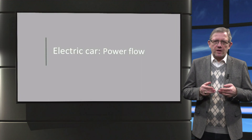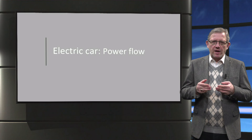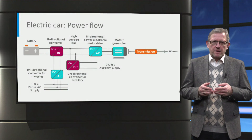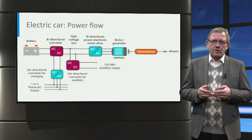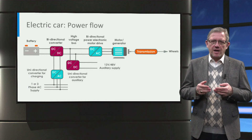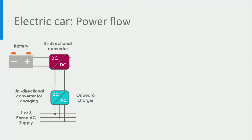Now that we know the different parts of the electric vehicle, let's have a look at how the electric vehicle operates based on the electrical power flow. This figure shows the typical electrical layout of the components in an electric car, as seen earlier. The power is delivered from the AC grid to charge the battery via the on-board AC-to-DC rectifier and DC-to-DC battery converter.